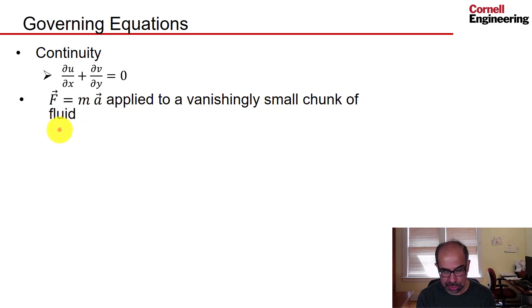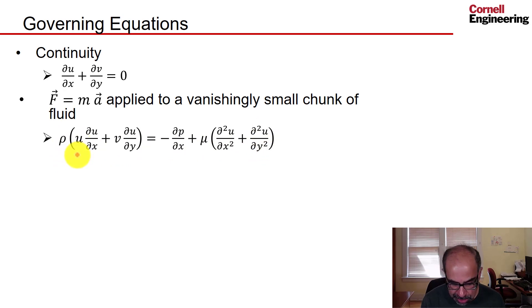That is F equals ma in the x direction. It's written as ma equals F rather than F equals ma, and it's written per unit volume, which is why you get density instead of mass.